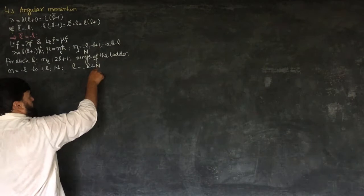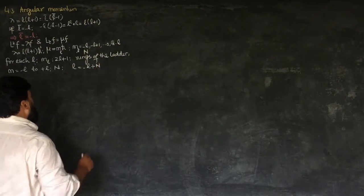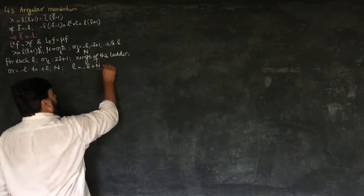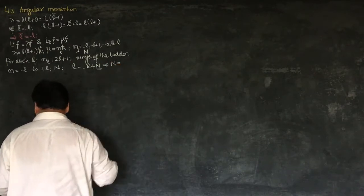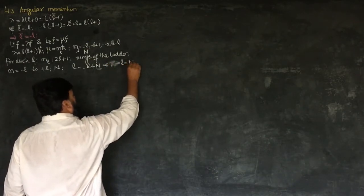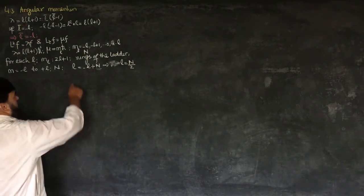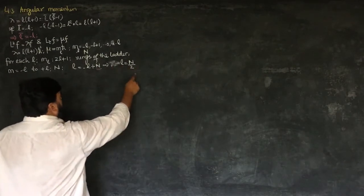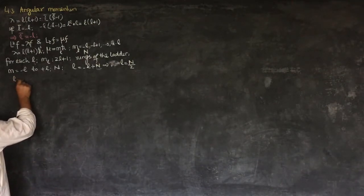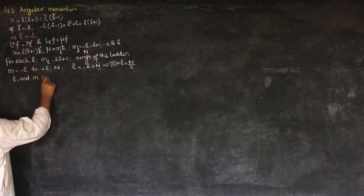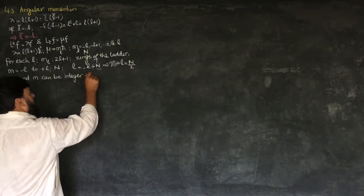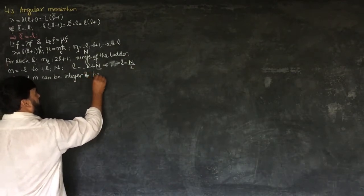So as n will be increasing, I know it will be minus l plus n, and we will have only the n value. So this implies that these integers give us l is equal to n over 2. That is, 2l is equal to n, and l is equal to n over 2. So this gives us another result that l and m can be integer as well as half-integer.